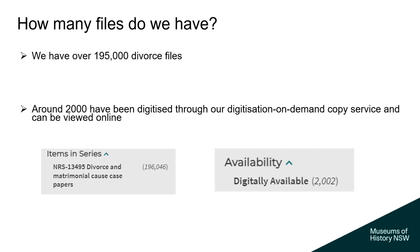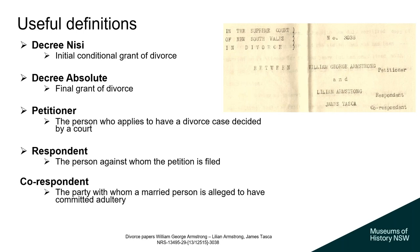We have over 195,000 divorce files within our collection and about 2,000 of these files have been digitised and can be viewed online. Within the files, there are various terms that are frequently mentioned. The main terms include: the decree nisi, which is the initial conditional grant of divorce; the decree absolute, which is the final grant of divorce; the petitioner, who is the person who applies for a divorce; and the respondent, who is the person against whom the petition is filed.